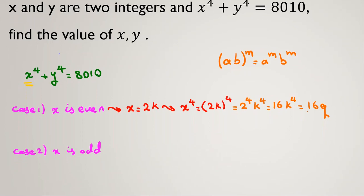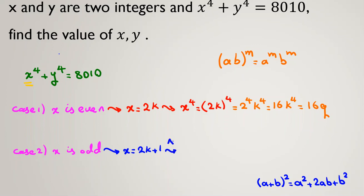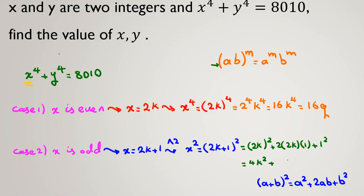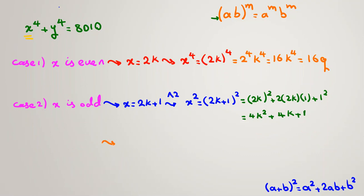Now let's consider x is odd, so x equals 2k plus 1. We use the famous identity (a + b)² = a² + 2ab + b². Raising x to the power of 2, x squared equals (2k + 1) squared, which expands to (2k)² + 2·(2k)·1 + 1², giving 4k² + 4k + 1. So x squared equals 4k² + 4k + 1.